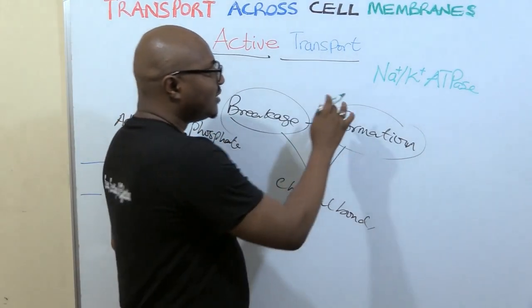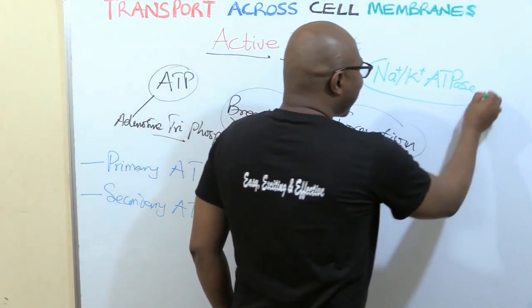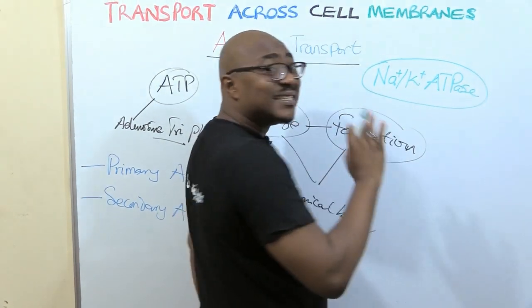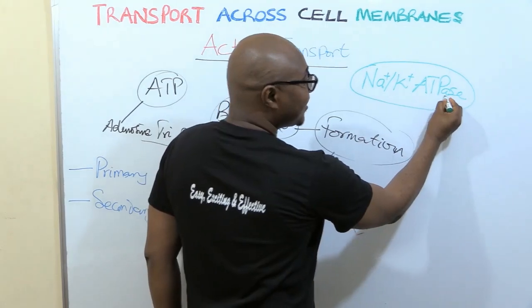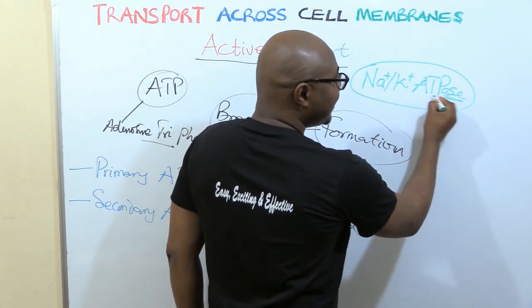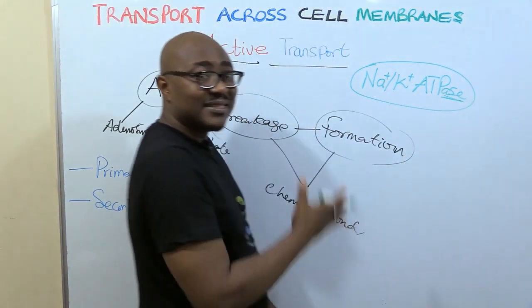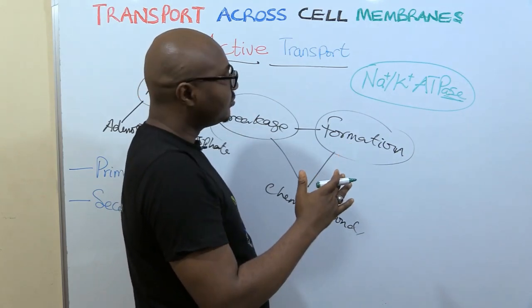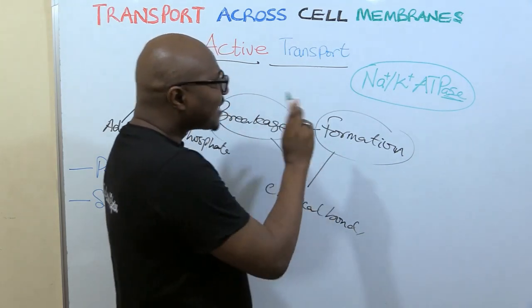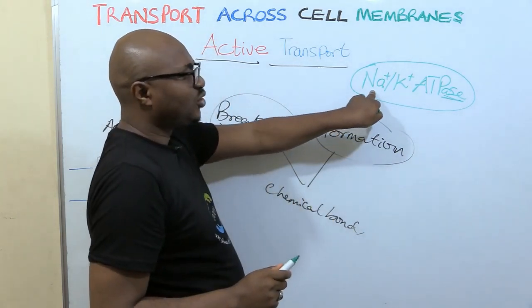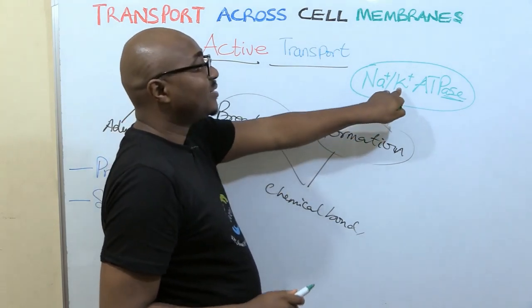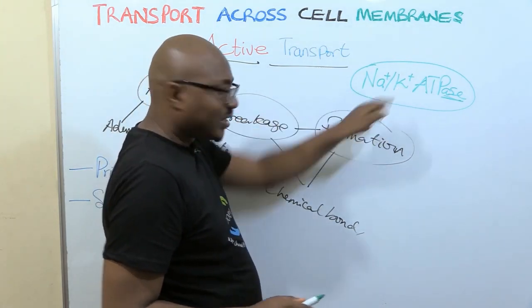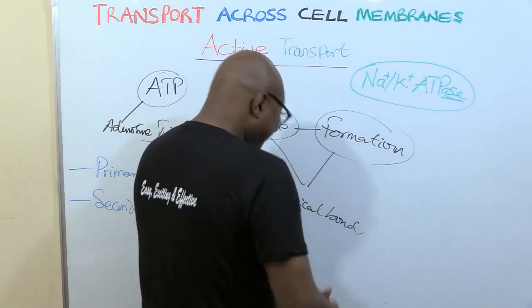This particular carrier protein, actually it's an enzyme. When you're talking about ATPase, it means it breaks down ATP. The carrier protein itself breaks down ATP. So this carrier protein carries sodium and it carries potassium. It is present in all cells.